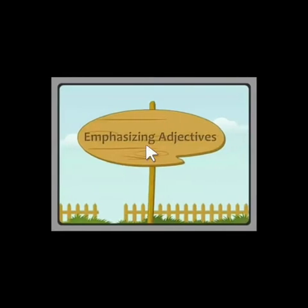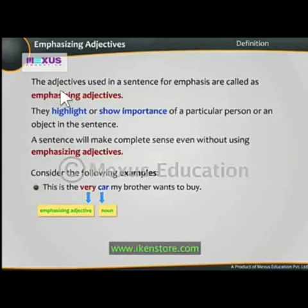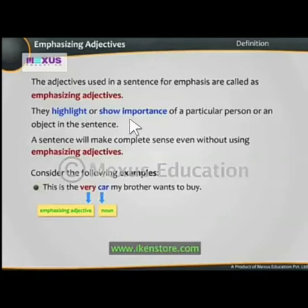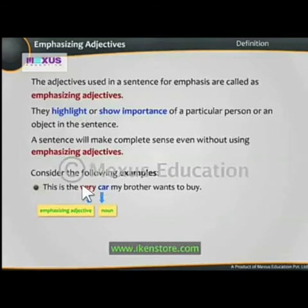Next are emphasizing adjectives. These adjectives are used in a sentence to highlight or show the importance of a particular person or object. For example: 'This is the very car my brother wants to buy.' Here 'very' is the emphasizing adjective.